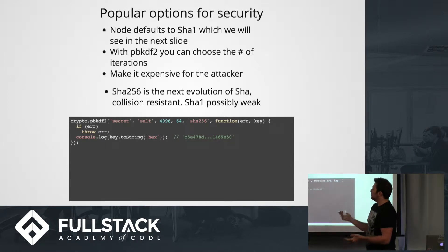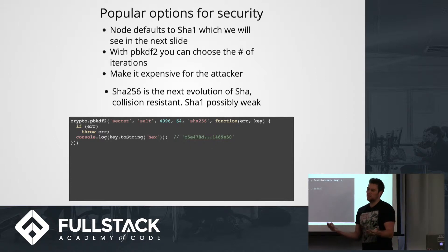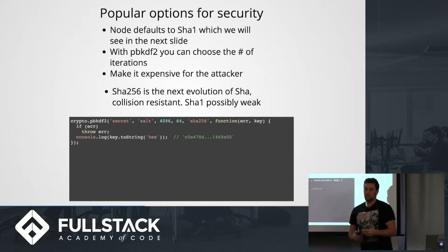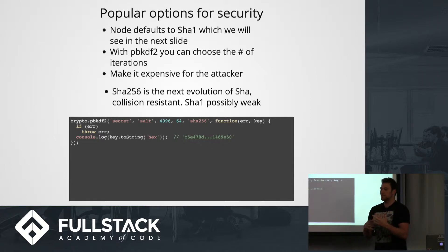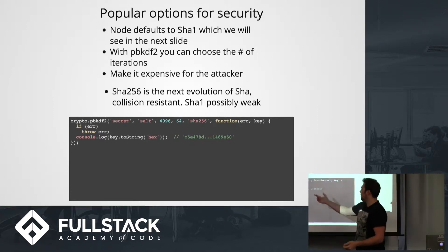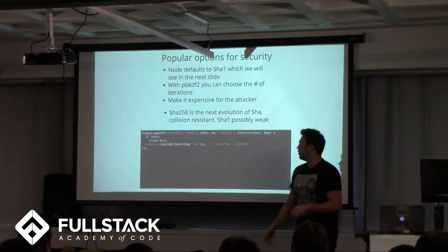Popular hashing options: Node defaults to SHA-1 with PBKDF2, which lets you choose the number of iterations. You want to make it expensive for the attacker — when you're hashing a password, you only do this once, so the user experience is barely affected if you add a millisecond. But for attackers computing this billions of times per second, it really adds up. SHA-256 is the next evolution — SHA-1's brute-force efficiency turned out to be better than anticipated, so the field keeps evolving.